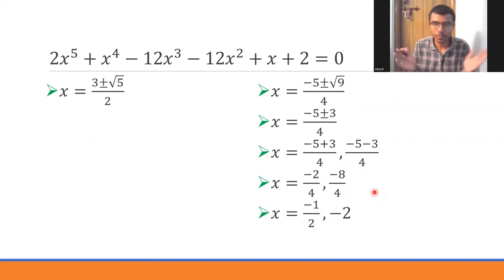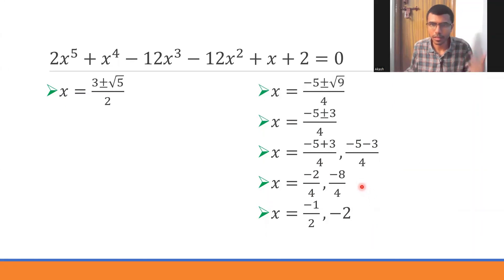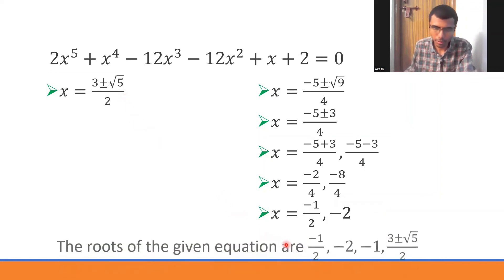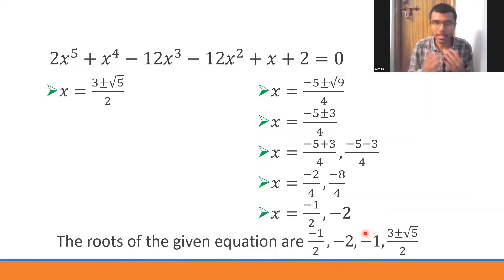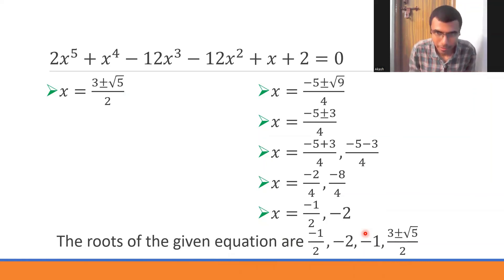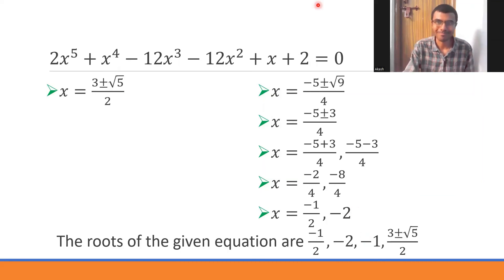Collecting all five roots: x = -1 (from x+1 factor), x = (3+√5)/2, x = (3-√5)/2, x = -1/2, and x = -2. That completes the solution. There are many more problems in the playlist — find the link in the description. If you found this helpful, please like and subscribe. Thank you!